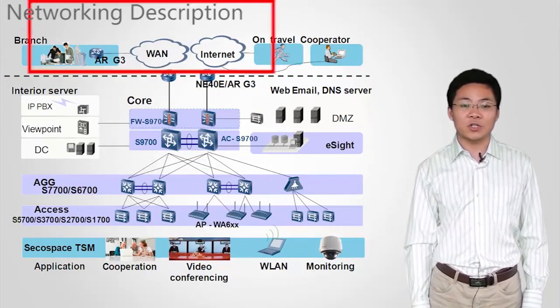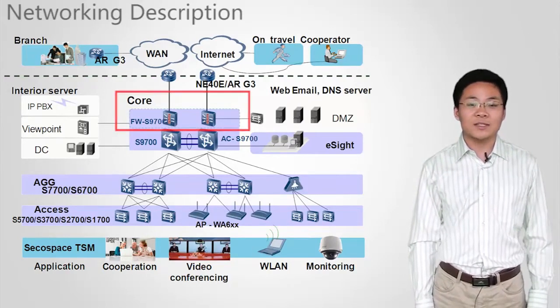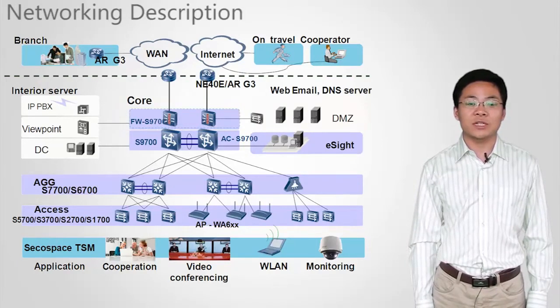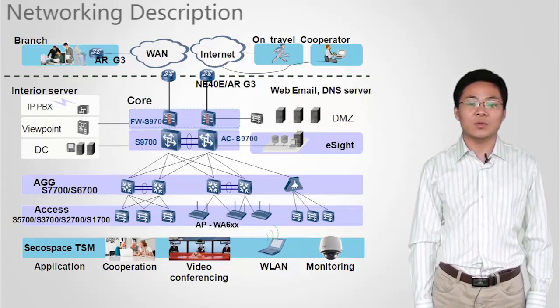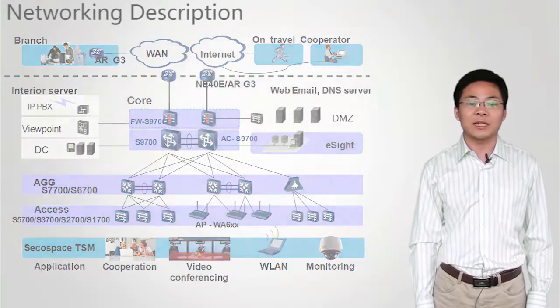S9700 switches, combined with SPUs, are used to build secure campus networks. S9700 switches with 10GE high-density line cards can build a 10GE campus network. S9700 switches are core devices for 10GE campus cloud networks.